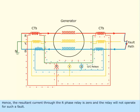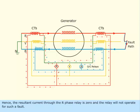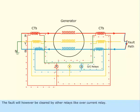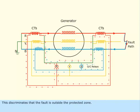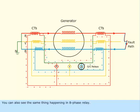Hence, the resultant current through the R phase relay is zero and the relay will not operate for such a fault. The fault will however be cleared by other relays like overcurrent relay. This discriminates that the fault is outside the protected zone. You can also see the same thing happening in B phase relay.